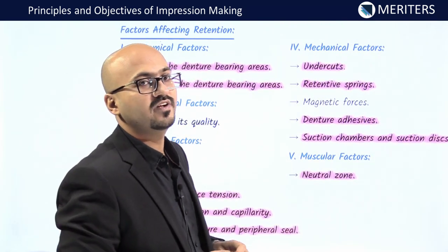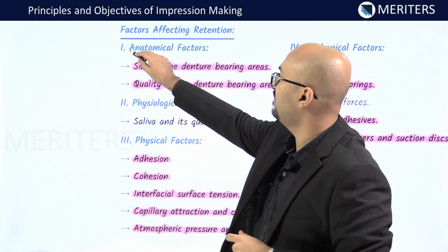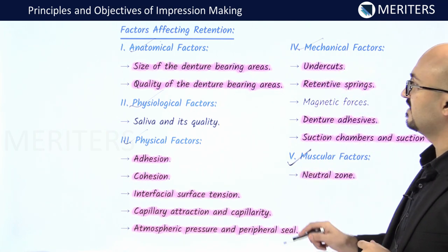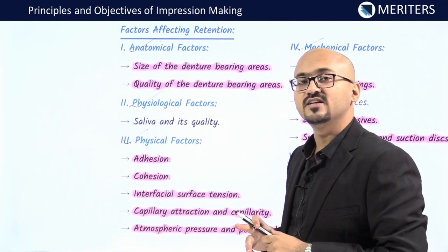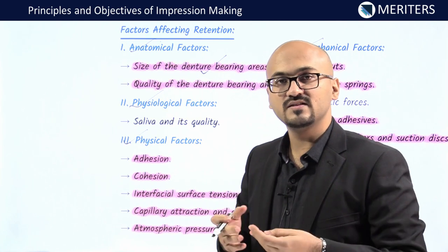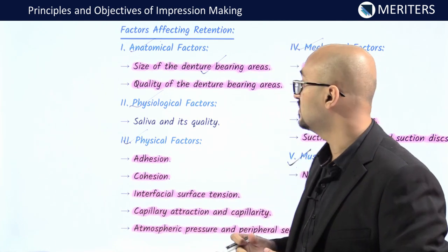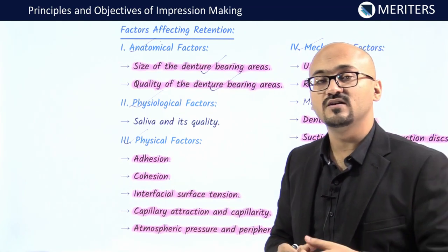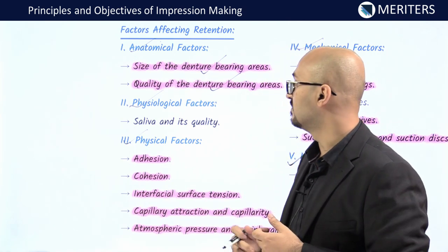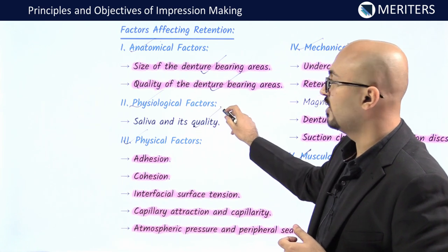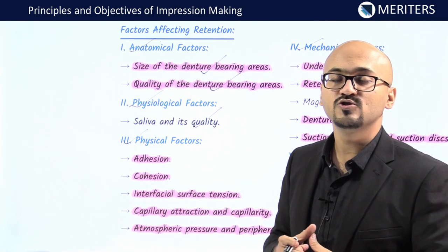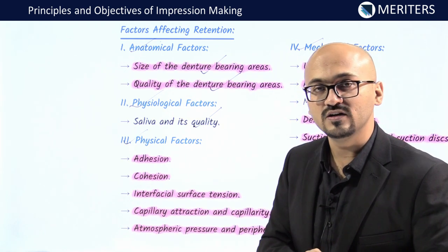Numerous factors affect complete denture retention: anatomical factors, physiological factors, physical factors, mechanical factors, and muscular factors. Anatomical factors include the size of the denture-bearing area — bigger the area, more the retention — and the quality of the denture-bearing area. If the mucosa is firm and resilient, retention will be superior. Physiological factors include saliva and its quality: mixed consistency and adequate quantity of saliva are important in adhesion and cohesion of the denture to the tissues. Saliva is a very important factor in determining the success of complete dentures.